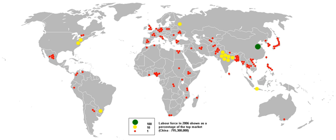India has over 50 major acts and numerous laws that regulate employers in matters relating to industrial relations, employee unions as well as who, how and when enterprises can employ or terminate employment. Many of these laws survive from British colonial times, while some have been enacted after India's independence from Britain. The Workman's Compensation Act of 1923 compensates a workman for any injury suffered during the course of his employment or to his dependents in the case of his death. The act provides for the rate at which compensation shall be paid to an employee.